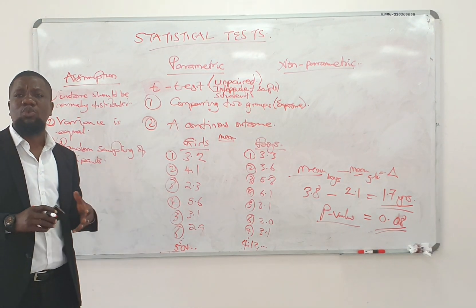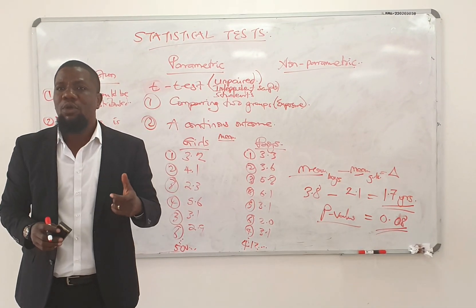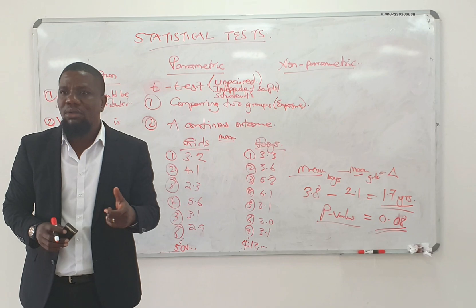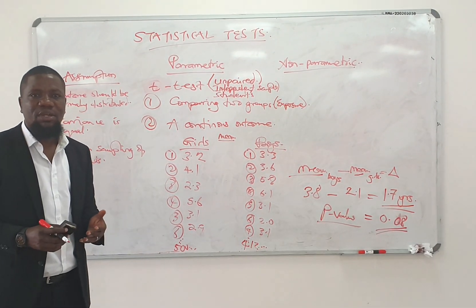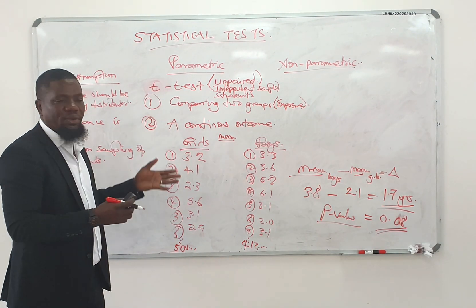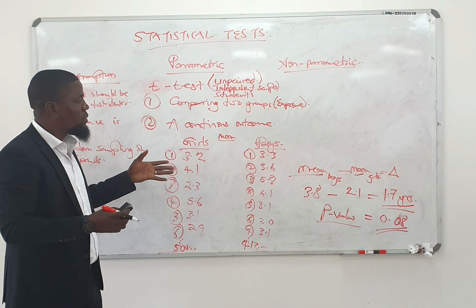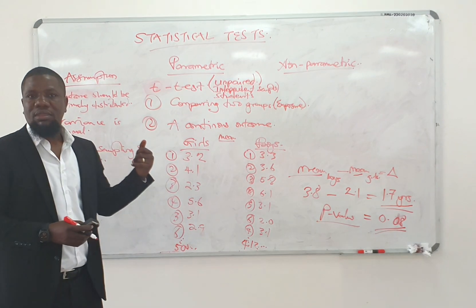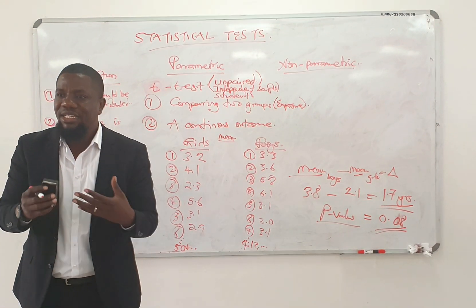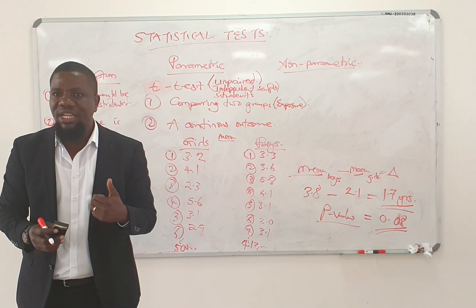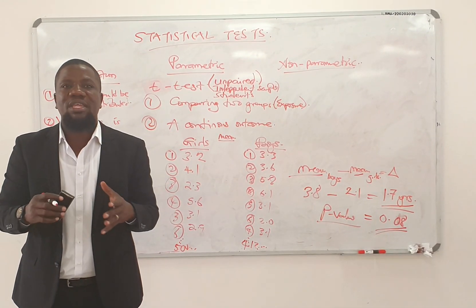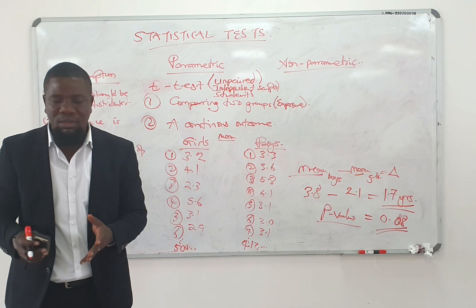Before you even do the t-test, you need to confirm that the assumptions have been met. The first thing you do is look at what kind of data you are dealing with. If your exposure is categorical with two groups — particularly dichotomous — that passes. The next thing is: is my outcome continuous? Yes, that passes — the t-test is possible to use. Then check whether the assumptions of the t-test have been met so that you can see whether the t-test can be used.